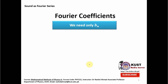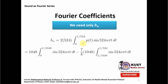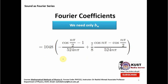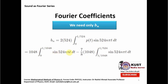Let us calculate the Fourier coefficients. Since we only need Bn, this is the general formula for Bn — it is an integral of P(t) and sine(524·n·π·t). By putting the value of n ranging from 1 upward we can calculate all the coefficients. We simplify this integral by splitting it into two parts and solving them independently. These are just sine integrals, and after integrating and applying the limits we can calculate both integrals.